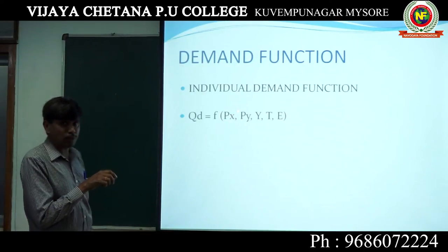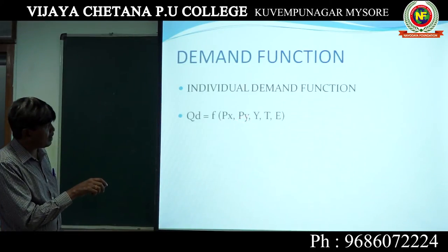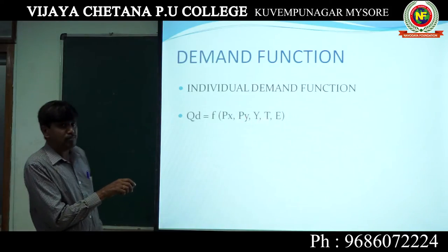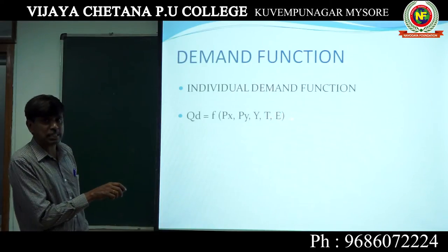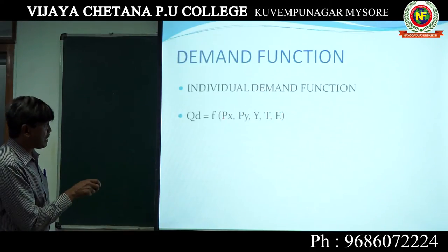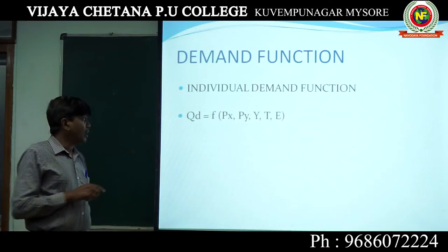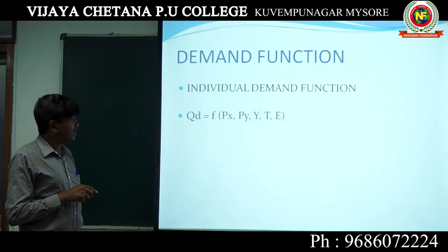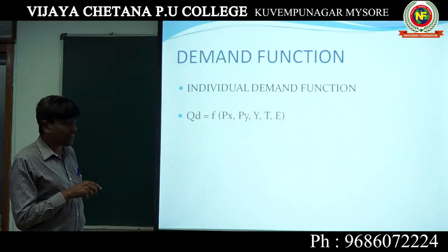Price of one particular good, price of related goods, Y means income, T means taste and preferences, E means expectations. Let us look at Px — price of x good. If price increases, it influences demand; if price decreases, it also influences demand. Price of related goods includes substitute goods.